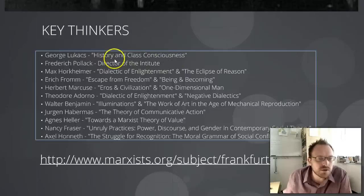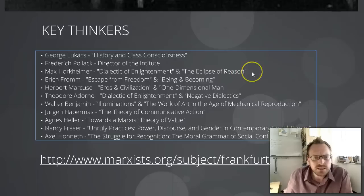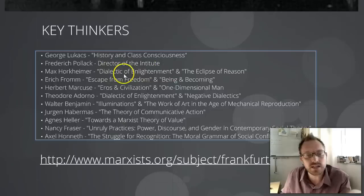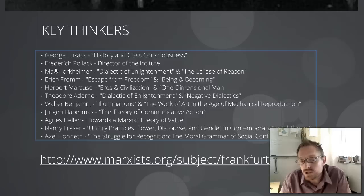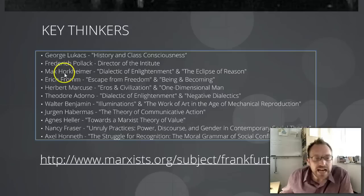Other important thinkers: Frederick Pollock, who at one point became the director of the Institute. Max Horkheimer is one of the key thinkers — probably the most influential. He wrote The Dialect of Enlightenment and The Eclipse of Reason, among other works. We'll be talking about The Eclipse of Reason, which is something of a sophomore version of The Dialect of Enlightenment — this is his sort of magnum opus. The Dialect of Enlightenment was actually co-authored with Theodore Adorno, who also wrote another book called Negative Dialectics. Horkheimer and Adorno are really pivotal and important figures, and I encourage you to take a look at Adorno's work as well.